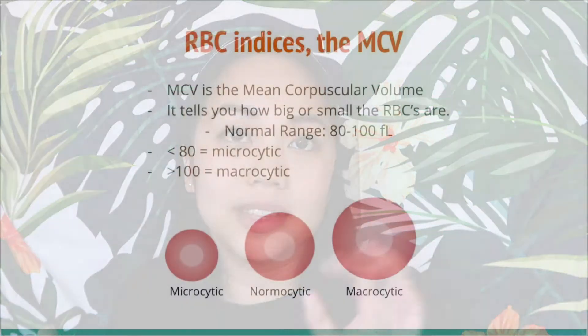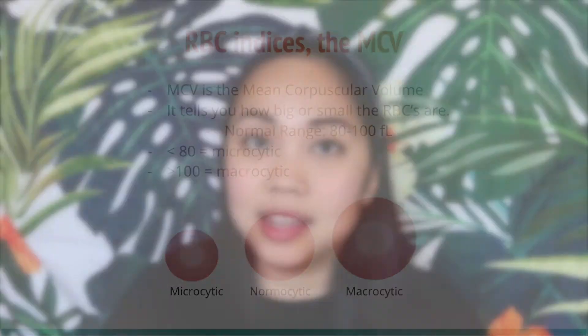If MCV is less than 80 femtoliters, your RBCs are smaller than average — they're microcytic. If they're within the normal range, that's normal. If MCV is greater than 100 femtoliters, the RBCs are macrocytic — they're large.